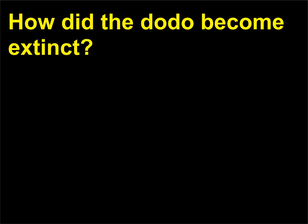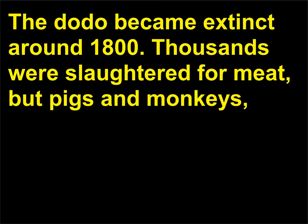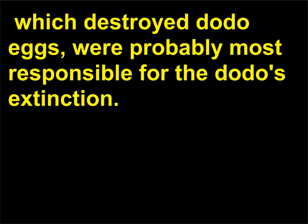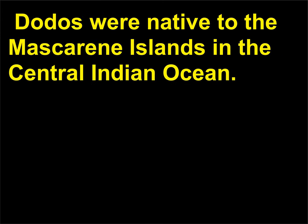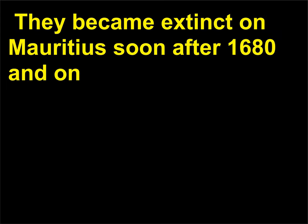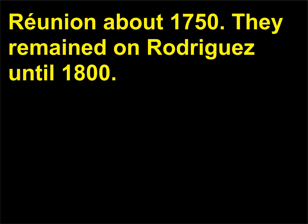How did the dodo become extinct? Thousands were slaughtered for meat, but pigs and monkeys — which destroyed dodo eggs — were probably most responsible for the dodo's extinction. Dodos were native to the Mascarene Islands in the central Indian Ocean. They became extinct on Mauritius soon after 1680, on Réunion about 1750, and remained on Rodrigues until 1800.